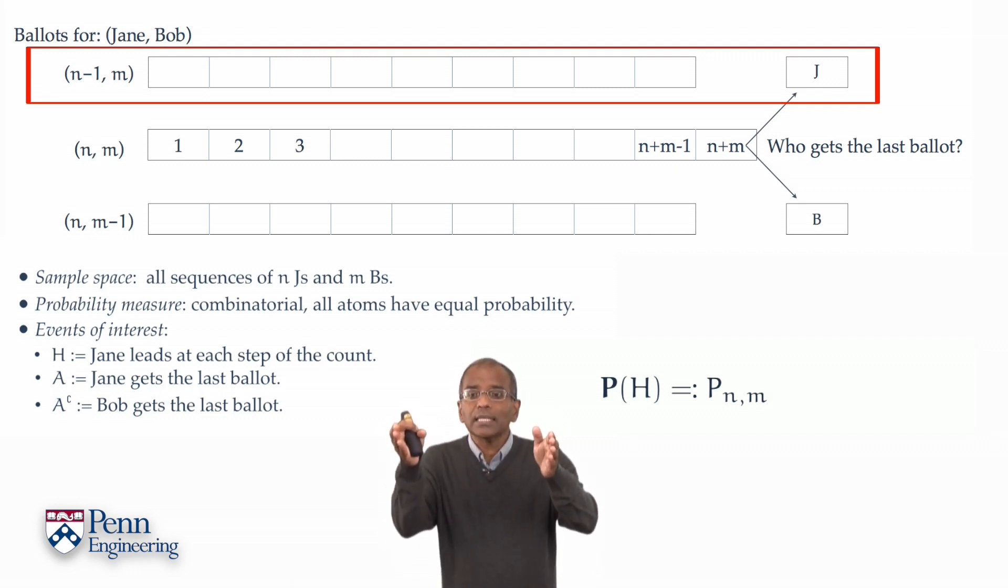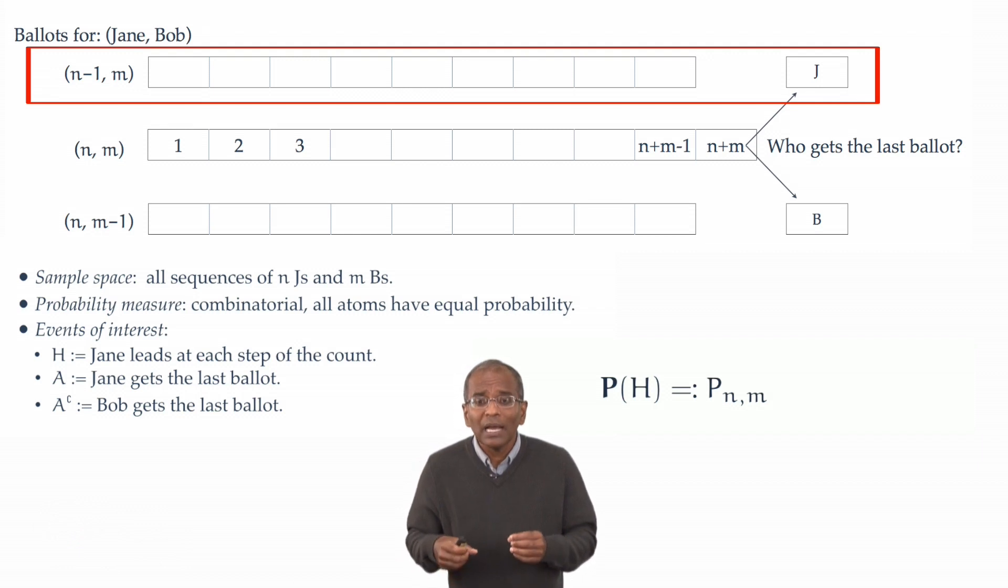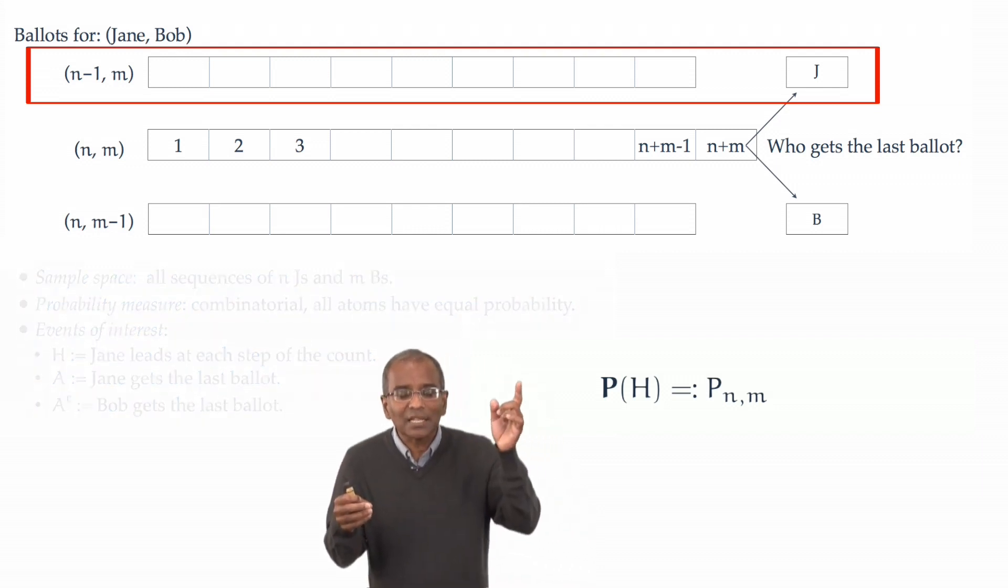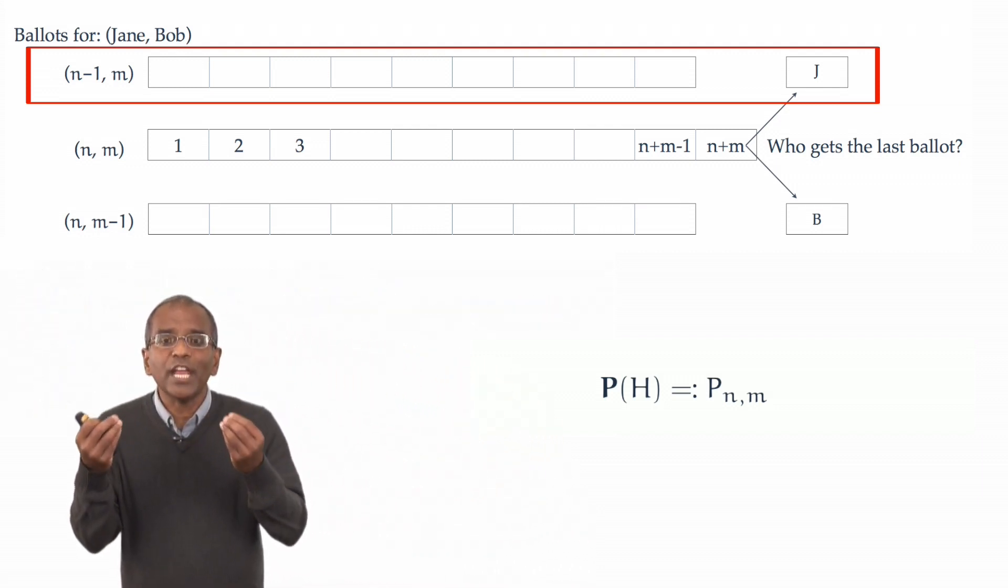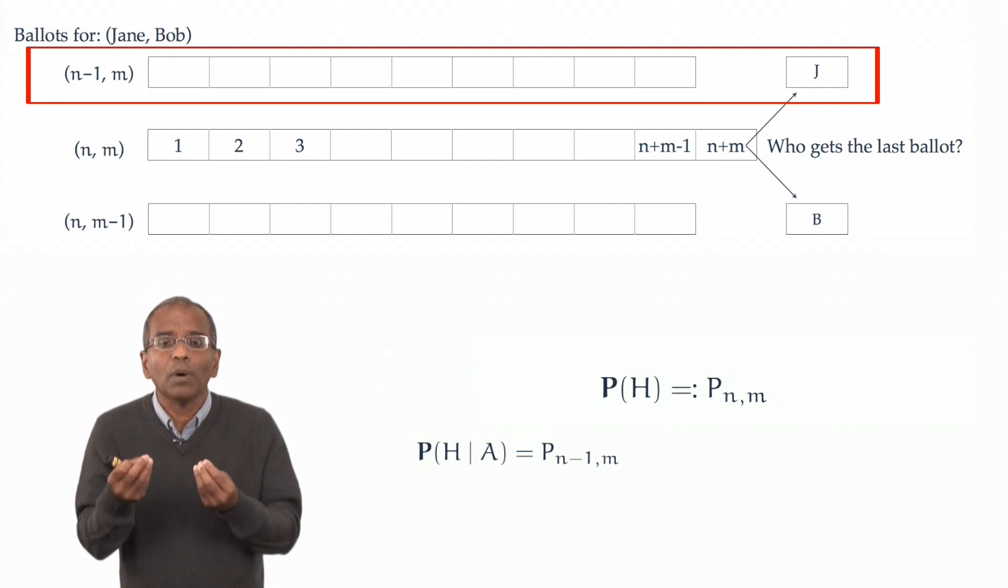And whatever the arrangement, it has to be the case that the running total over those n plus m minus 1 ballots has to favor Jane at every step. This suggests that all we have done is reduced the size of the problem from n plus m ballots to n plus m minus 1 ballots. From n votes for Jane to n minus 1 votes for Jane. From m votes for Bob to m votes for Bob. And therefore, the conditional probability that Jane leads every step of the way, given that she gets the last ballot, the conditional probability of H given A is, in our notation, p of n minus 1 comma m.